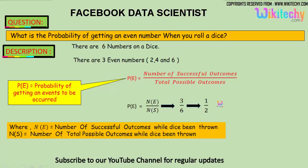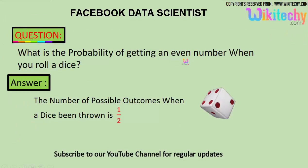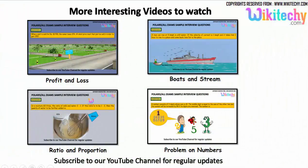Three by six, you get one by two. So the number is one by two. The probability of getting an even number when you roll a dice is one by two. That's the answer.